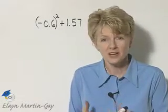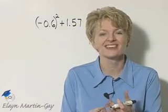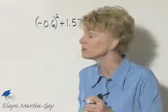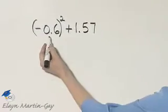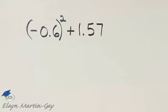Let's evaluate this expression. Remember to keep in mind how you perform operations on decimals and order of operations. So keep those two things in mind and let's simplify. Here I have negative 6 tenths squared plus 1 and 57 hundredths.